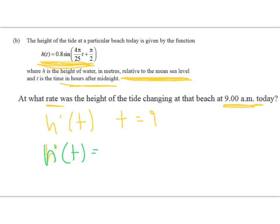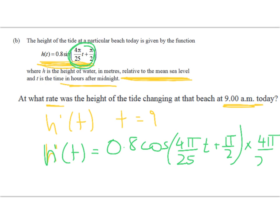h'(t). Well, the derivative of sine is cosine, so let's do that bit first. We're going to have 0.8 cos(4π/25·t + π/2). Now we have to multiply by the derivative of the inside function, which is going to be times 4π/25, just the coefficient of that t.